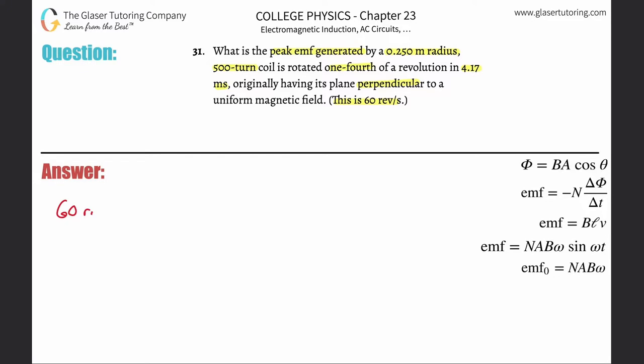So there's going to be 60 revolutions per second. Revolutions on the bottom because we need them to cancel, radians on the top. There's 2π radians in one revolution, so revolutions cancel out and we get radians per second.